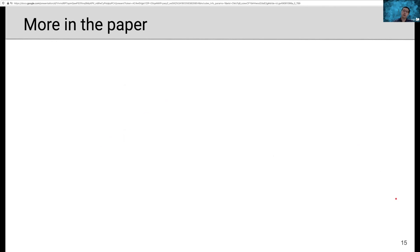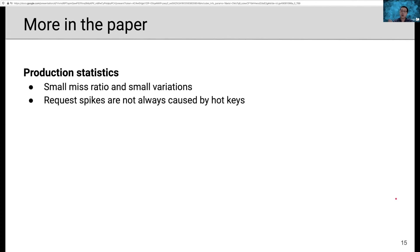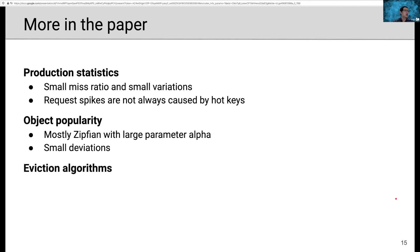So far we have talked about write-heavy workloads, object size and evolution, and TTL. Due to time limits, in the paper we showed that there are more discussions on production statistics. We showed that production caches have a small miss ratio with small variations. The small variation is very important to production cache. Second, we showed that request spikes are not always caused by hot keys. We also studied object popularity. And we showed that most workloads follow Zipfian distribution with large parameter alpha. In other words, these workloads are highly skewed. While some workloads show some small deviations. Last, we studied eviction algorithms. We showed that the best eviction algorithm is highly workload dependent. And we observed four types of results.